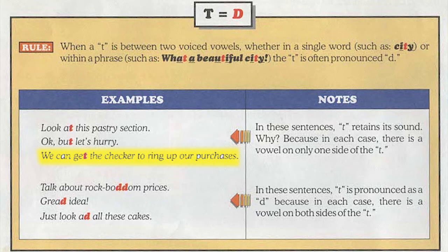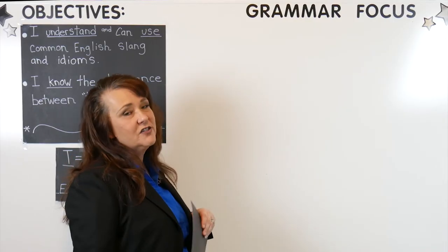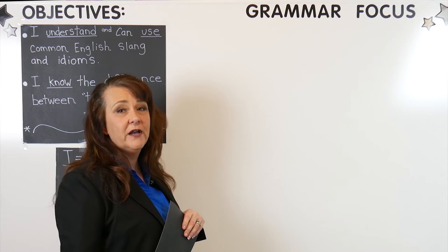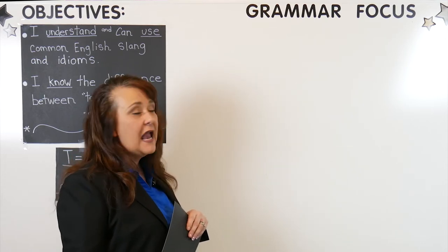The last example: 'We can get the checker to ring up our purchases.' The word 'get' is spelled with a T and it also sounds like a T. But now look at this example: 'Just look at all these cakes.' The word 'at' is spelled with a T, but what you hear is 'Just look at all these cakes' — it sounds like a D. Why is that? Well, there's actually a reason why you hear these sounds very differently. It has to do with vowels and where the T is located.